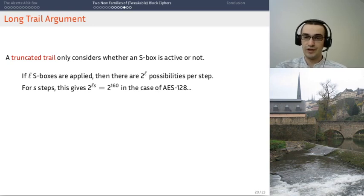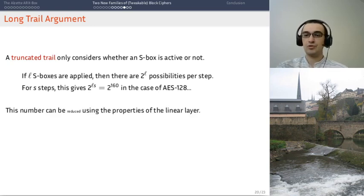You're not going to enumerate all of those. So, you can reduce this number to some extent using the properties of the linear layer. So, not all transitions are possible from one round to the next. So, you can use that to reduce the search space significantly.